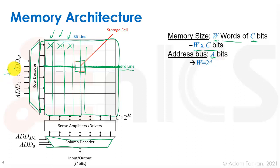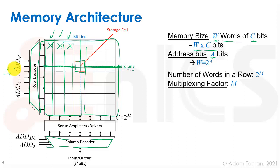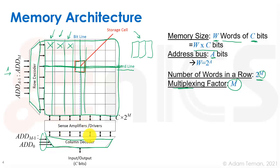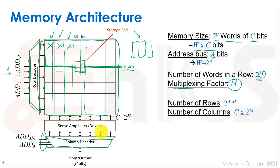As we saw last time, it's very inefficient to put all the words in a one-dimensional array, so we fold and put several words next to each other to get a more square ratio. The number of words in one row is 2 to the power of M, where M is the multiplexing factor — that's the number of bits going into the column multiplexer to select one word out of the 2^M words in an entire row. Of the total A address bits, M go to the column decoder and the remaining A minus M select the rows.